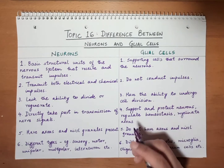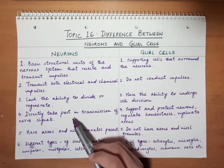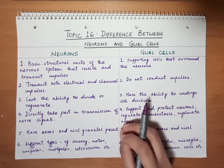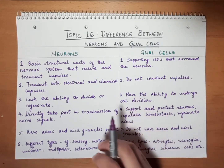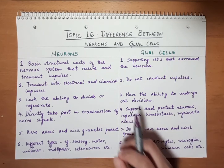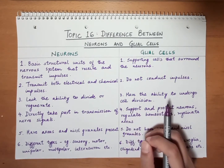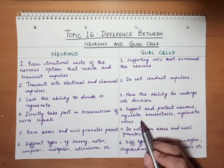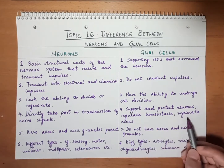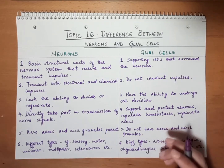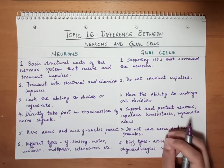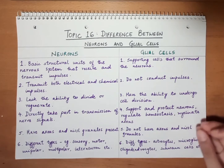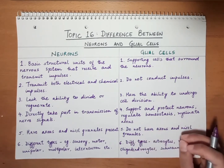Next, coming to the functional aspect: neurons directly take part in the transmission of nerve signals — that is their main function, to transmit impulses from the body to the brain and from the brain to the body. The glial cells, on the other hand, function to support and protect the neurons, regulate homeostasis, and carry out myelination of axons, helping neurons conduct nerve signals properly.